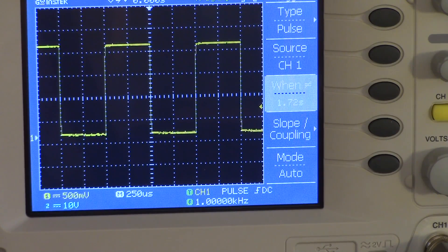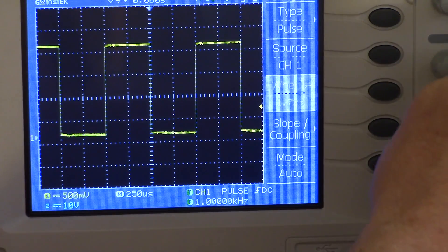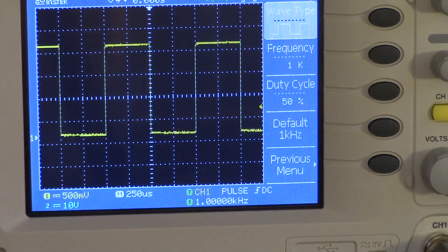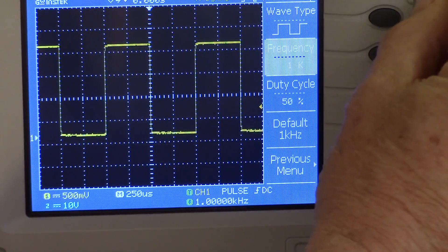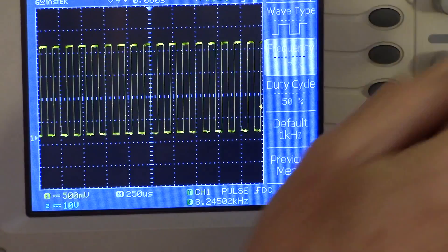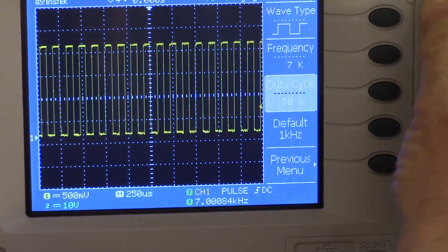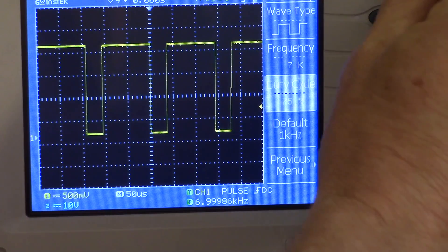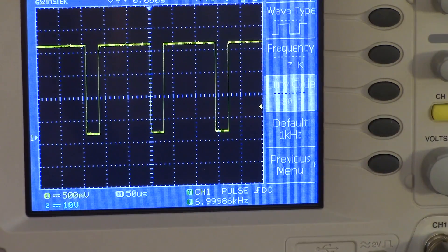Like every scope on the market, it has a scope probe compensation output, which is this here. On every other scope I've used, that's a 1 kHz square wave, which is the default mode on this scope as well. One thing that I really like about this scope is that there's a probe compensation menu, and you can actually set the frequency to any frequency from 1 to 100 kHz. And what's even cooler is you can program in the duty cycle as well of the signals, so that you get an effect of a poor person's pulse generator with this thing.